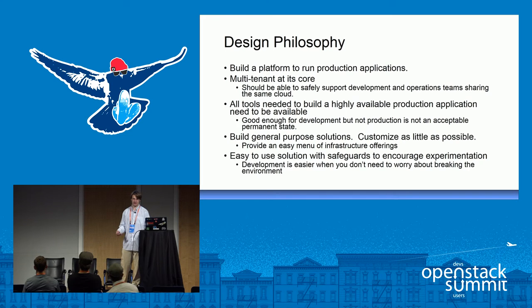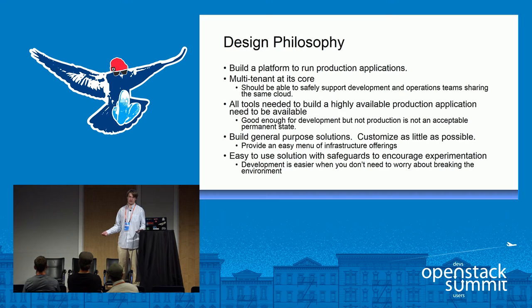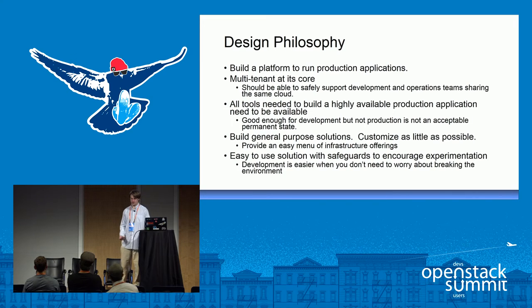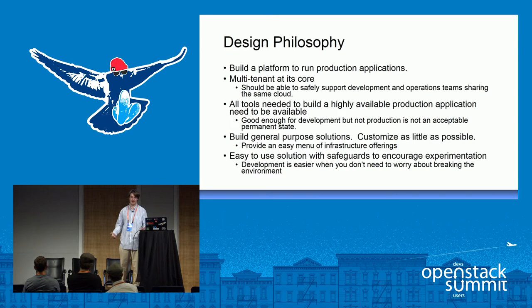Everything we put into this platform and into OpenStack has to have a path to live. We didn't want to put any toys in it. We wanted all of our offerings to be general purpose and customized as little as possible. Once you get OpenStack out there, people always ask for specific core-and-memory configurations not in your flavor model. If you go down that path, you get flavors with application names in them. We drew a hard line — everything should be general purpose. We also wanted a solution with good safeguards that encouraged experimentation, giving developers a faster feedback loop without worrying about bringing down the entire environment.